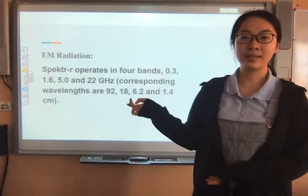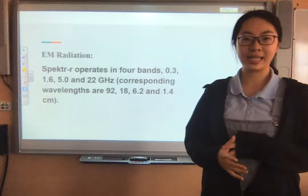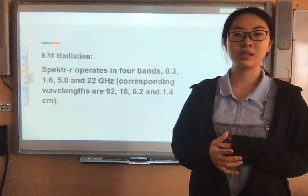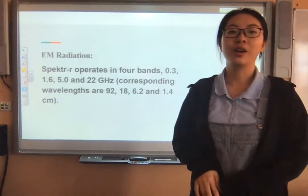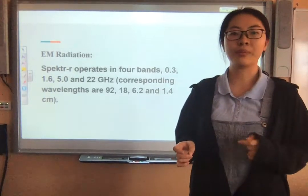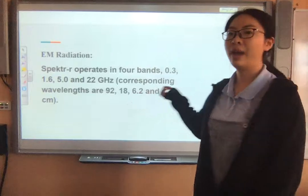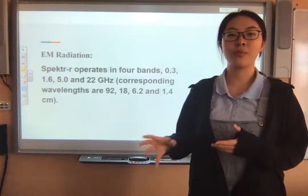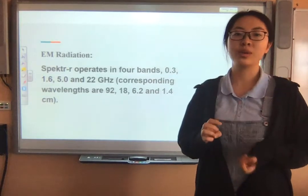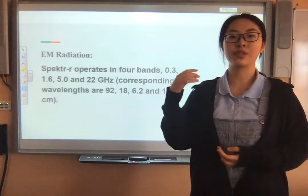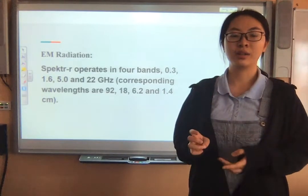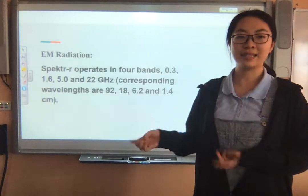Spectra-R operates at four frequencies: 0.3, 1.6, 5.0, and 22 gigahertz. The corresponding wavelengths are 90, 18, 6.2, and 1.4 centimeters. Spectra-R is combined with large ground-based radio telescopes to resolve details as small as 7 microseconds of arc, which is used to observe radio sources in and out of the Milky Way. It uses the principle of light interference, which will be shown in the next section.